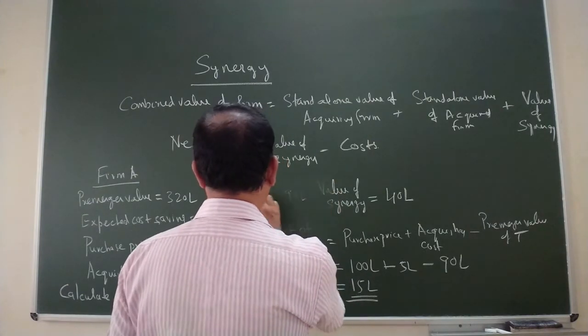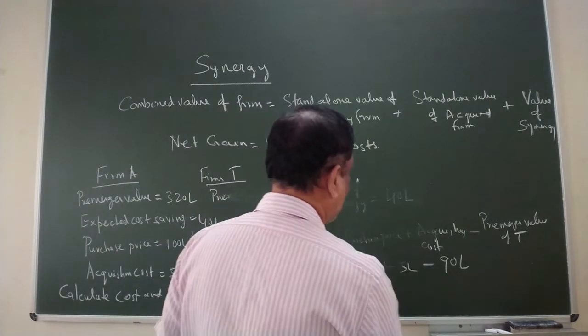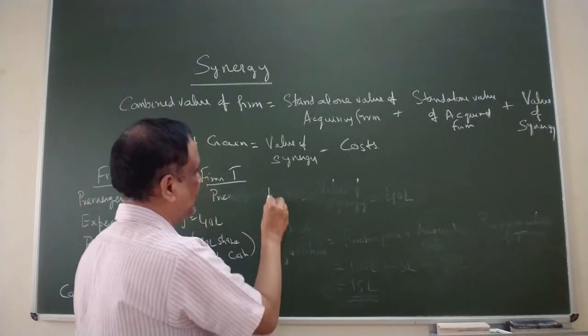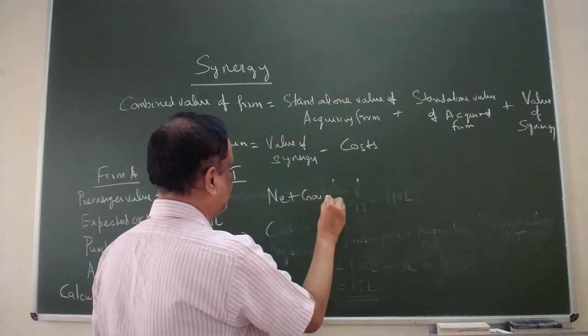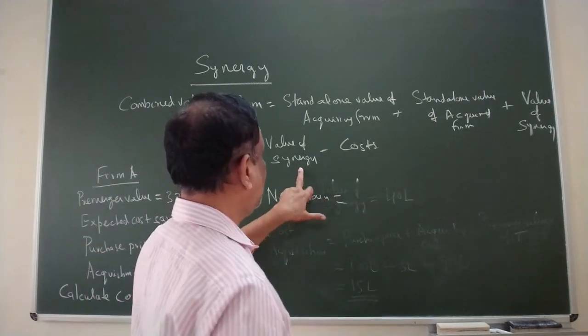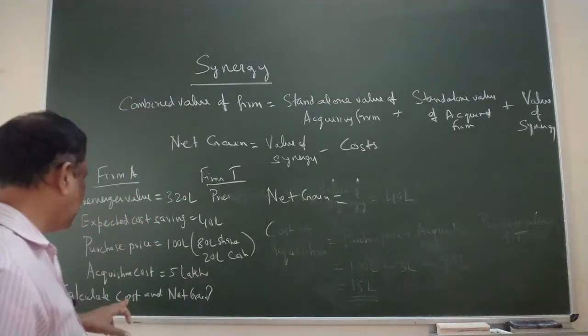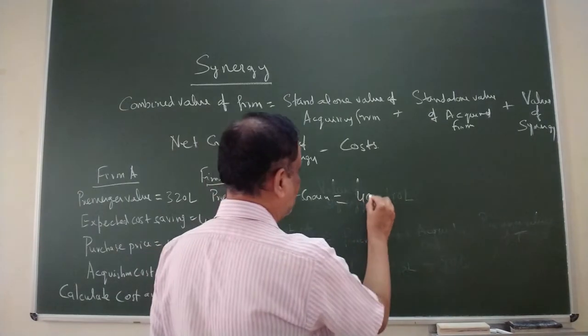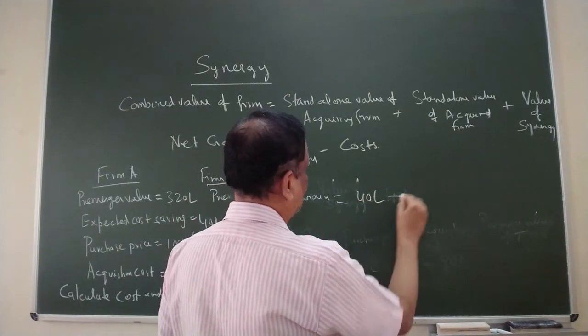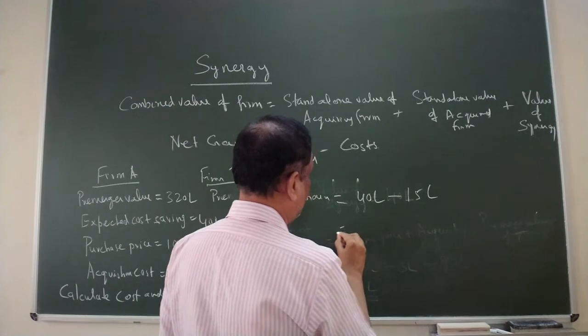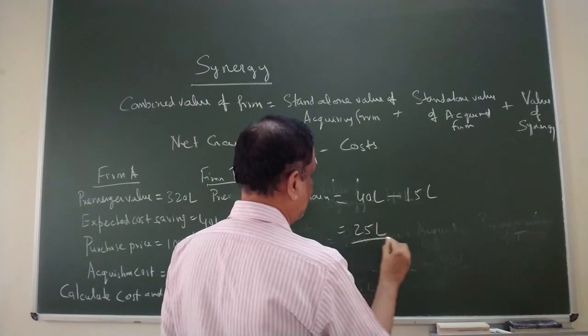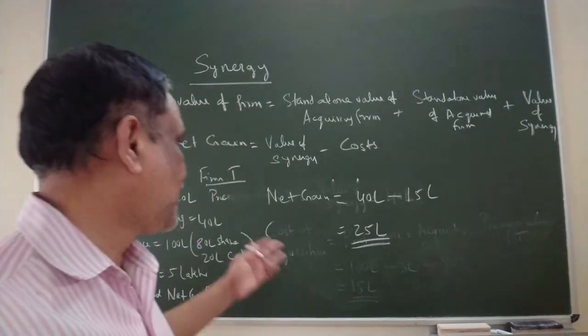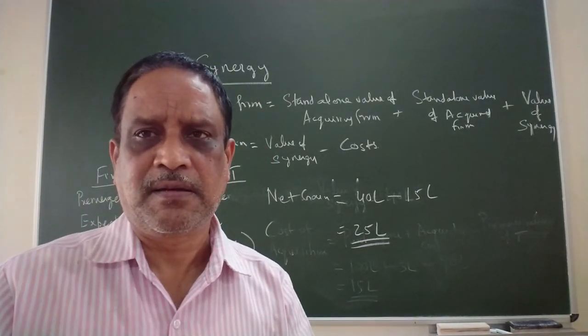Now you can calculate the value of net gain. The net gain is value of synergy minus cost. Value of synergy is nothing but the expected cost savings. That is 40 lakhs minus cost. Cost is 50 lakhs, that would be 25 lakhs. 25 lakhs is the net gain from the acquisition or transaction.